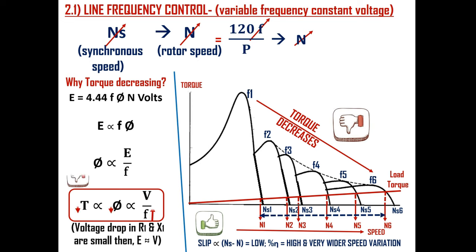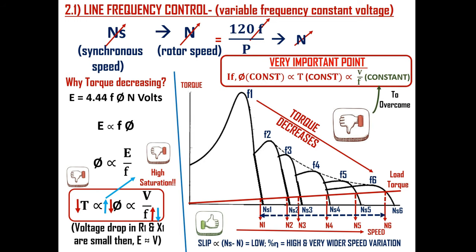As you can see from this equation, if frequency increases then magnetic flux decreases and hence torque decreases. It is also important to note that if frequency decreases, magnetic flux increases and there is a possibility of high saturation in the magnetic system of the machine. So this equation tells us that to overcome the decrease in maximum available torque with increasing frequency, and also to avoid high saturation with decreasing frequency, we need to maintain the magnetic flux and torque as constant — which is possible if we maintain the V/F ratio (voltage divided by frequency) as constant.